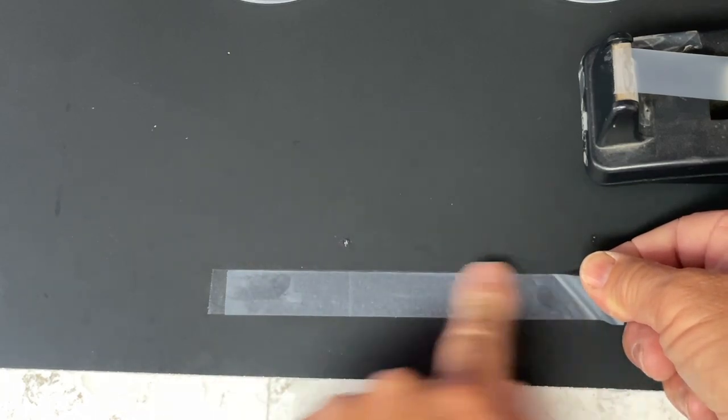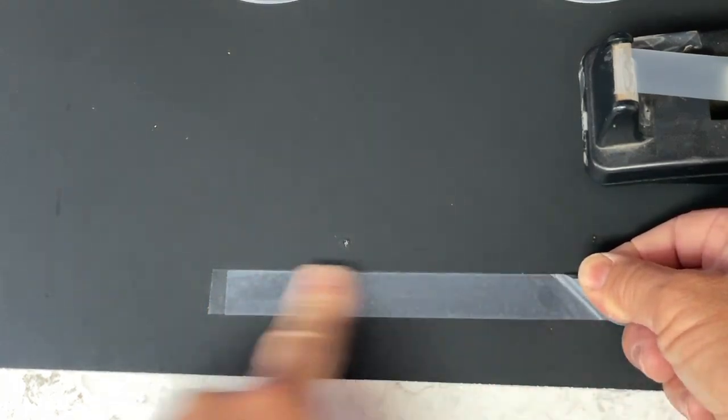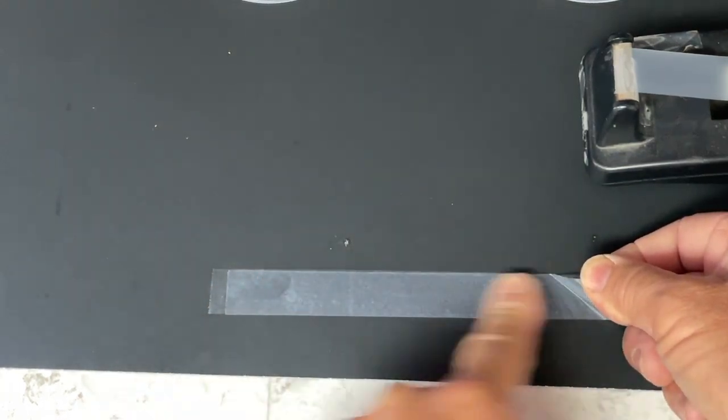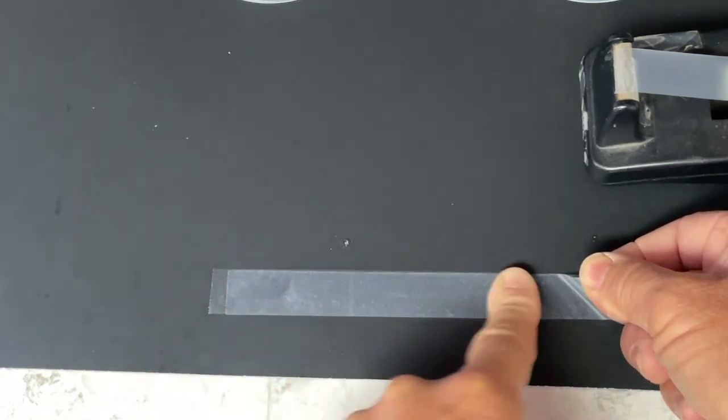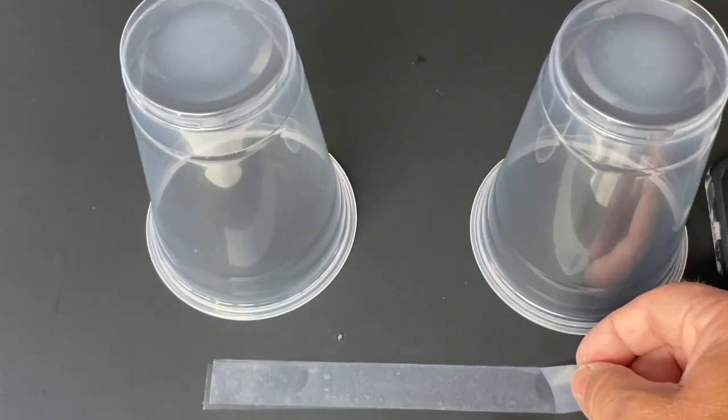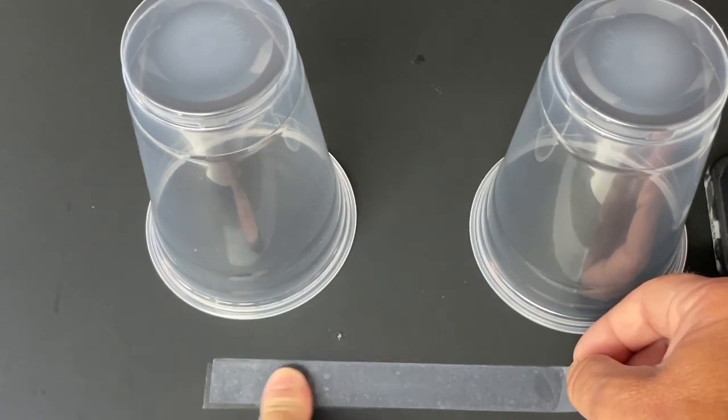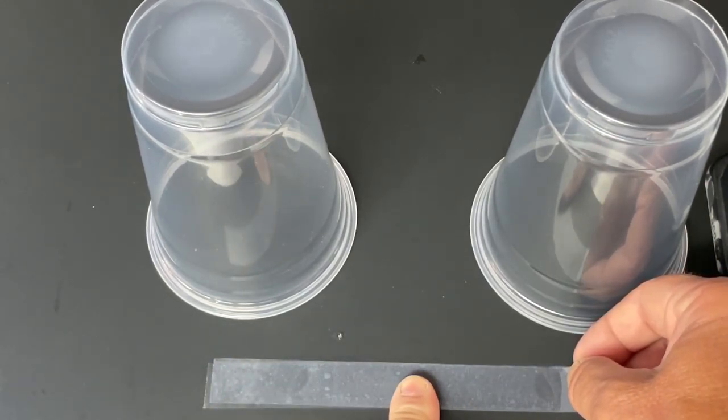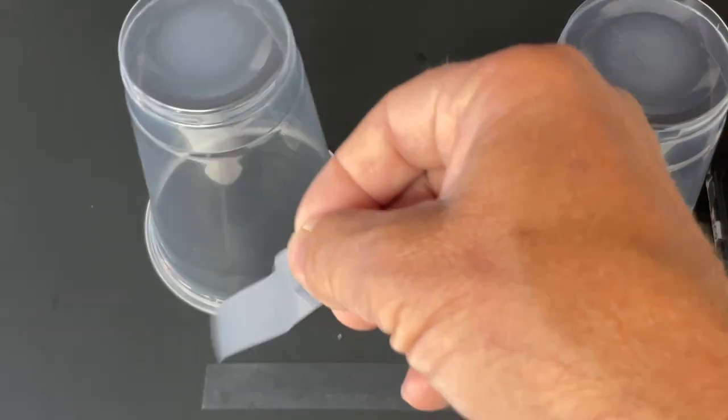Then I start rubbing my finger on the tape, which is charging by contact. So now when I remove the tape, I've transferred the electrons from the bottom of the tape to the top of the tape and it's fully charged, and then I place that tape on top of the two plastic cups.